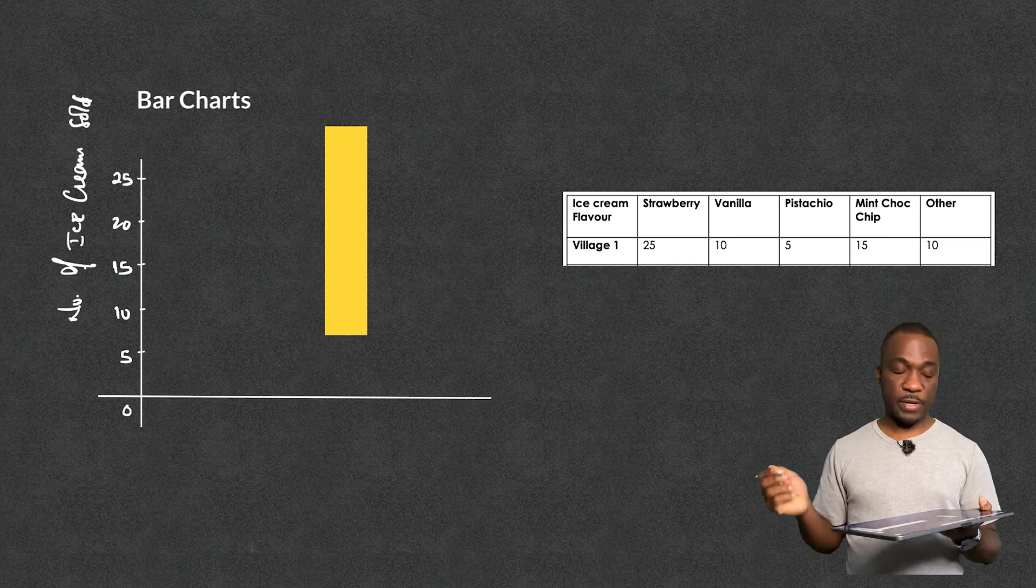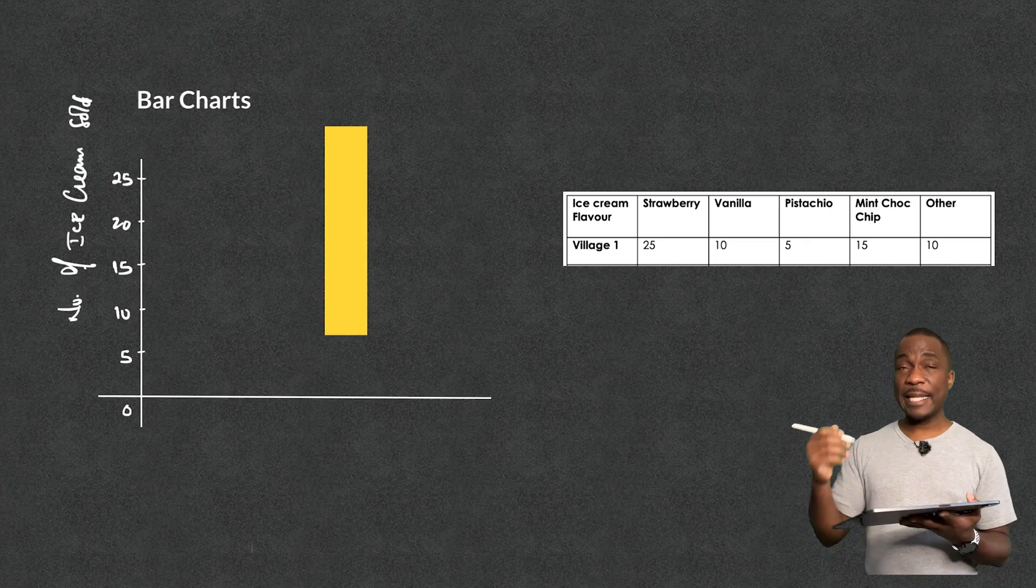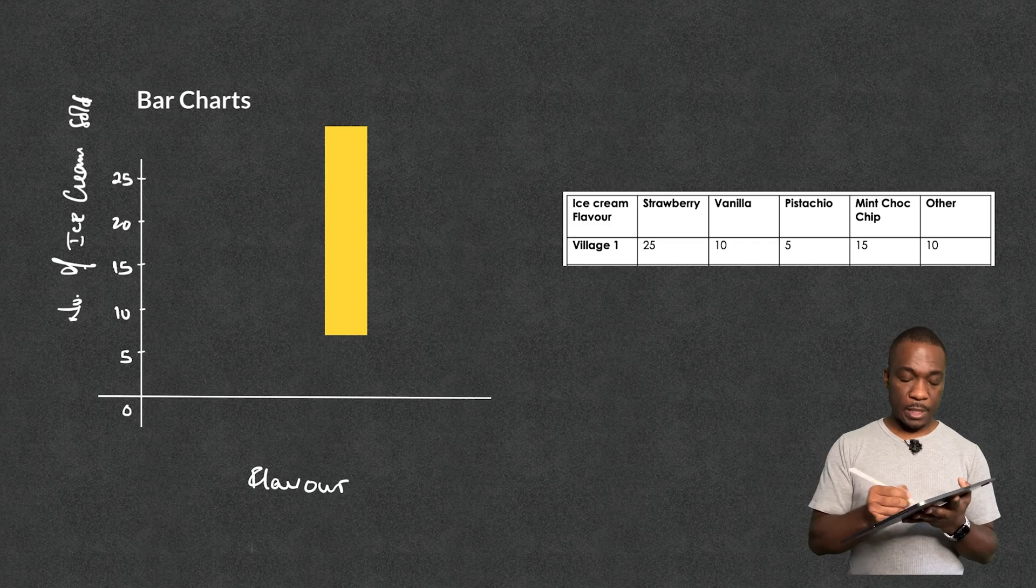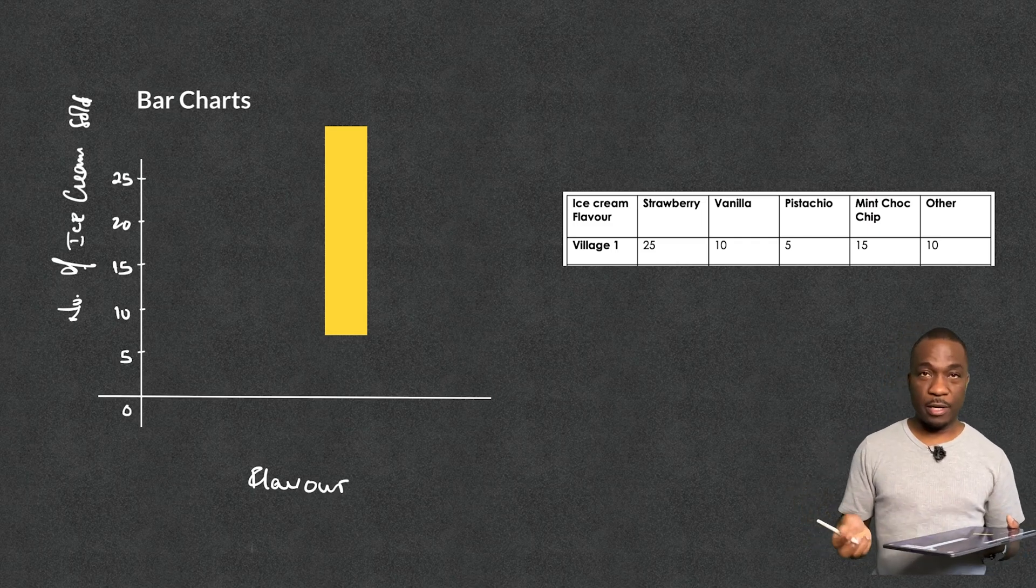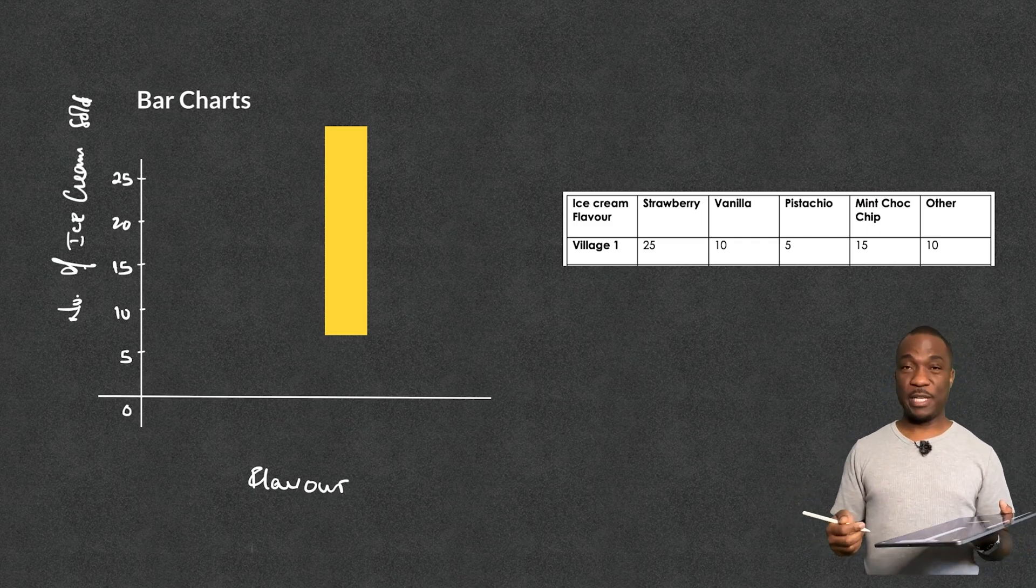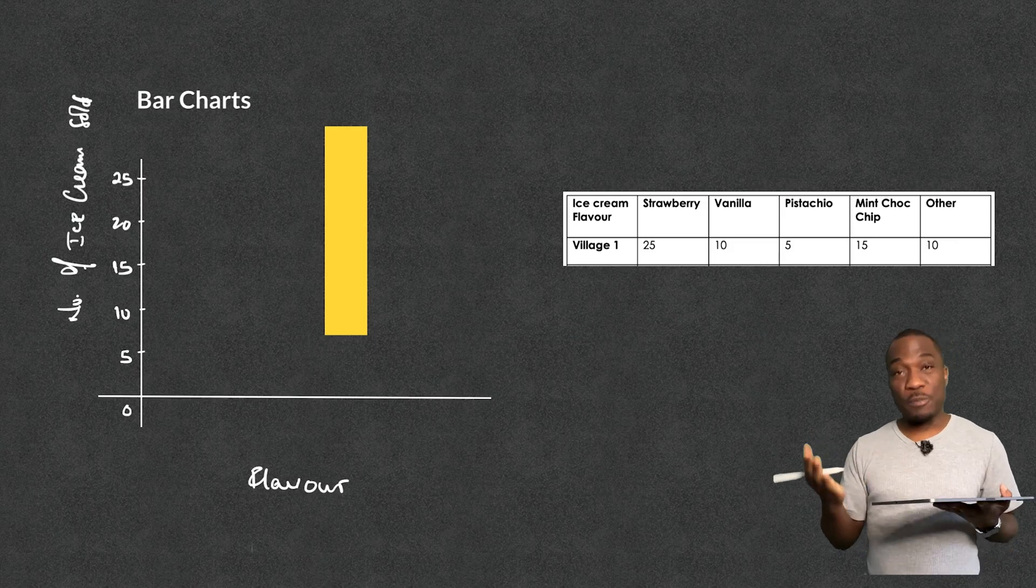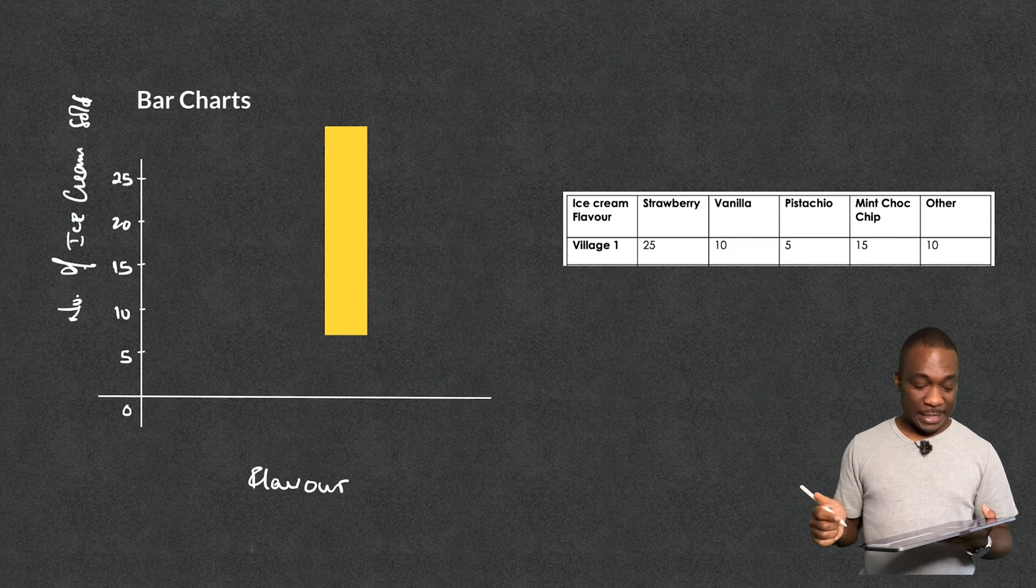So that's my number of ice cream sold. And then down the bottom, I'm going to have the flavors. And if you are in America, and you're watching this, and you see me spell flavor with a U, I'm so sorry I offended you. But here in England, we spell it with a U. So here we go.